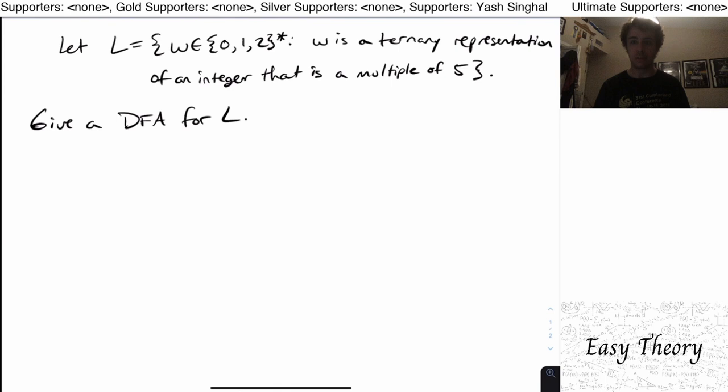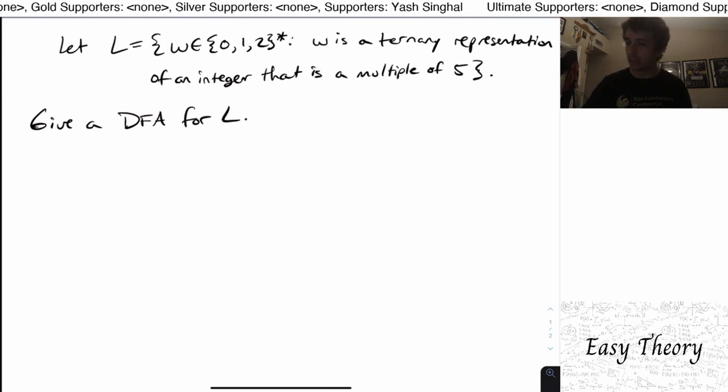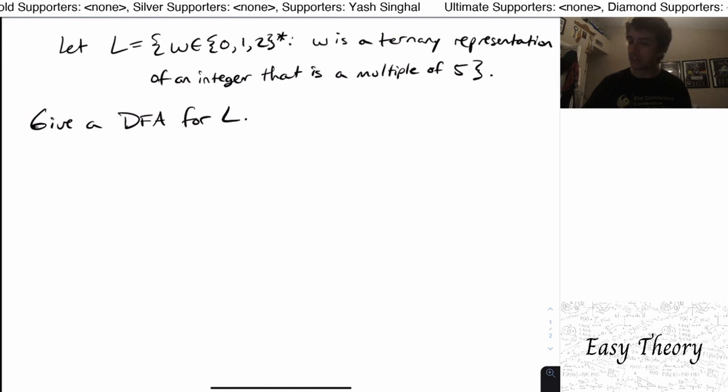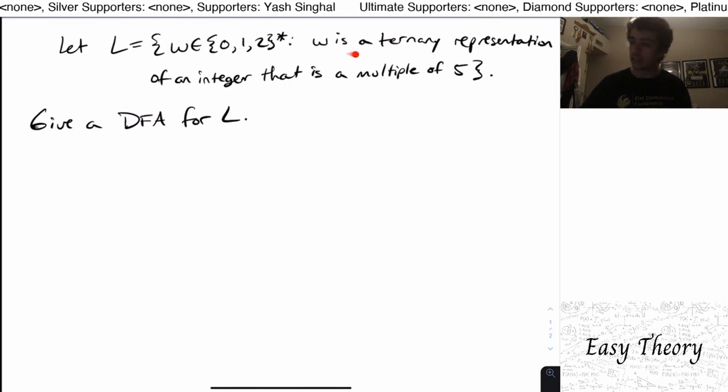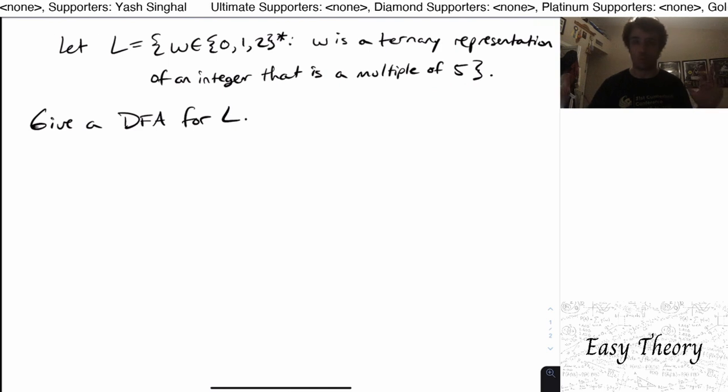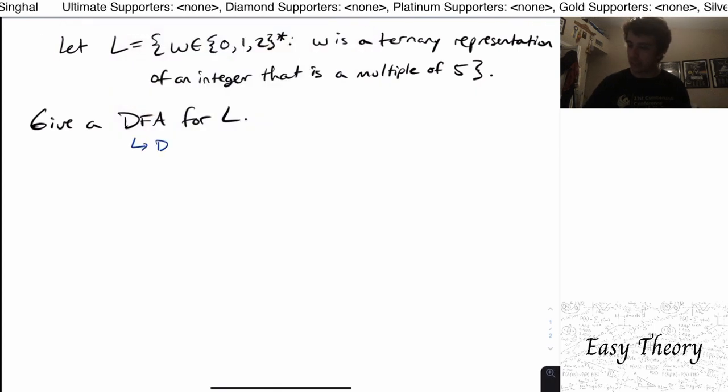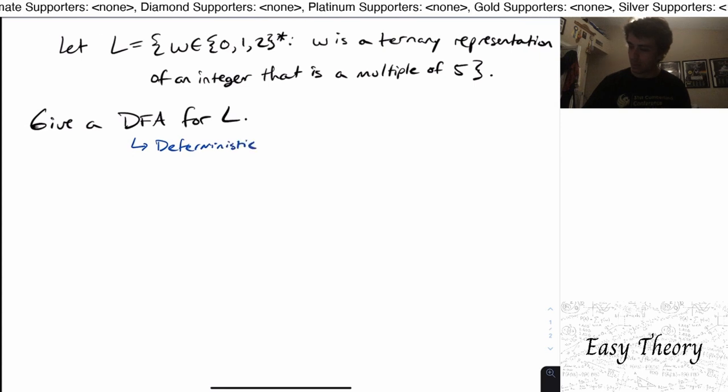Hi, and welcome back to another edition of Easy Theory. So today we're going to be looking at this language, this language L, which is the set of all strings w in 0, 1, 2 star, such that w is a ternary representation of an integer that is a multiple of 5. And we have to give a DFA for L. So recall that DFA just stands for deterministic finite automaton.